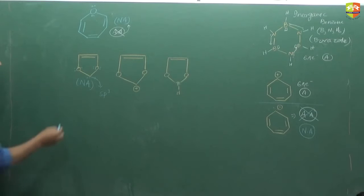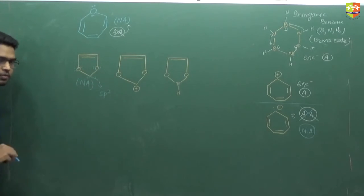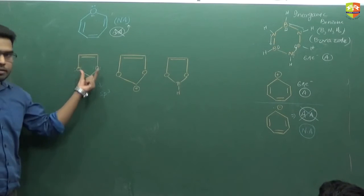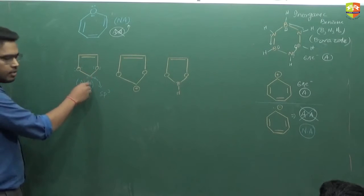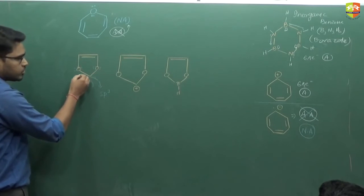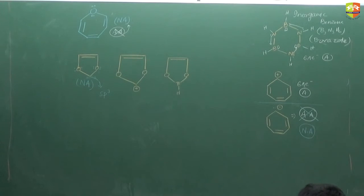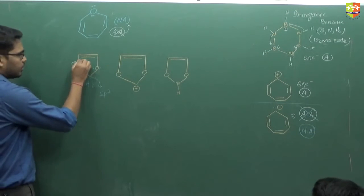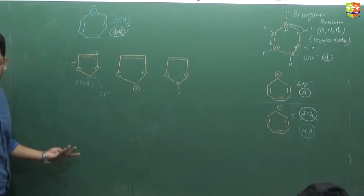We have conjugation till here, but this part is not in conjugation. So the compound is non-aromatic. Why non-aromatic? Because one carbon atom is SP3 hybridized — this entire ring is not in conjugation. SP3 means non-aromatic.